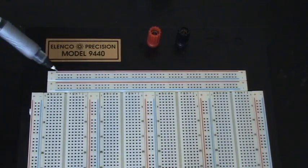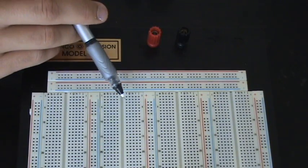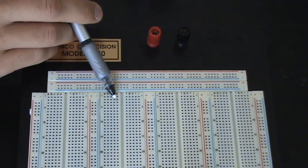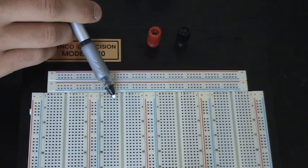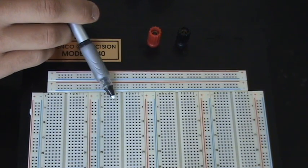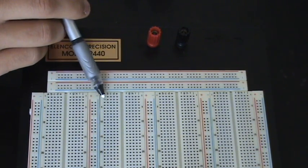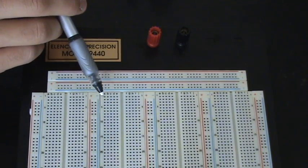So how this works is that each of these little lines of holes right here has a little wire strip underneath it. And the wire strips are in groups of five. So anytime you connect a wire in one of these holes, any hole alongside of it is already connected to that wire. All you have to do is push in the wire and it automatically connects.